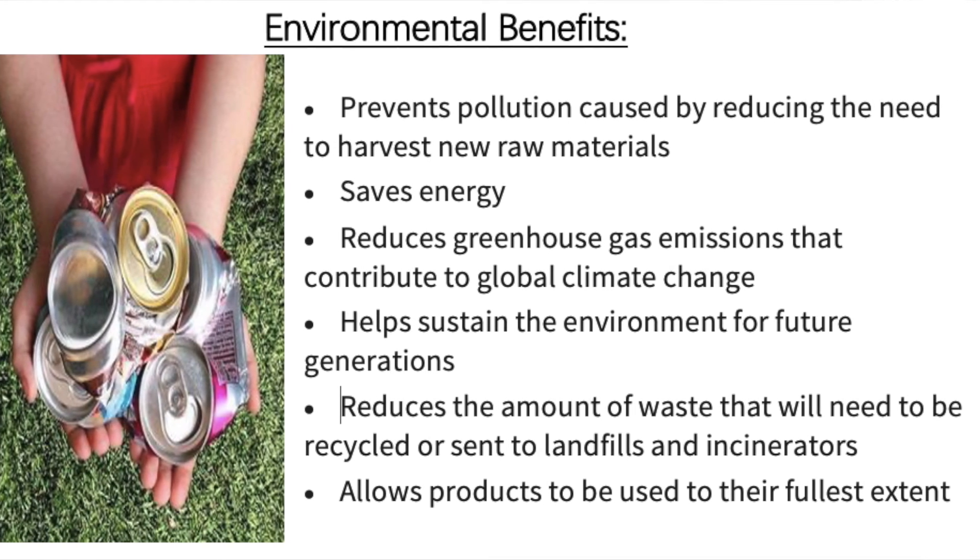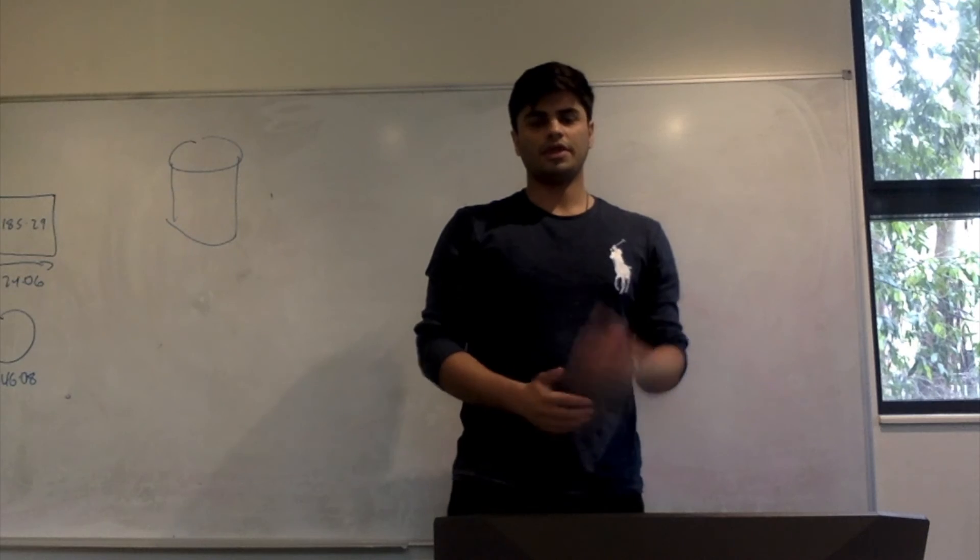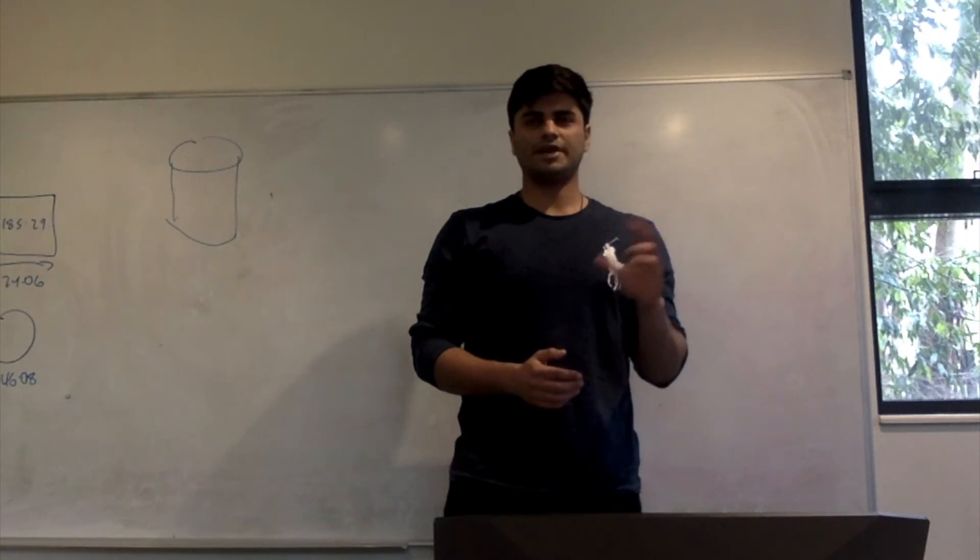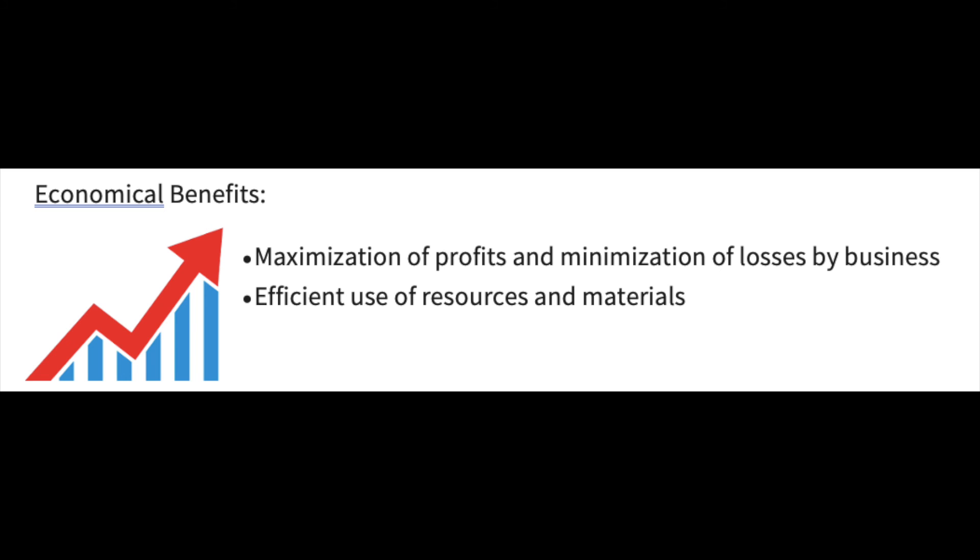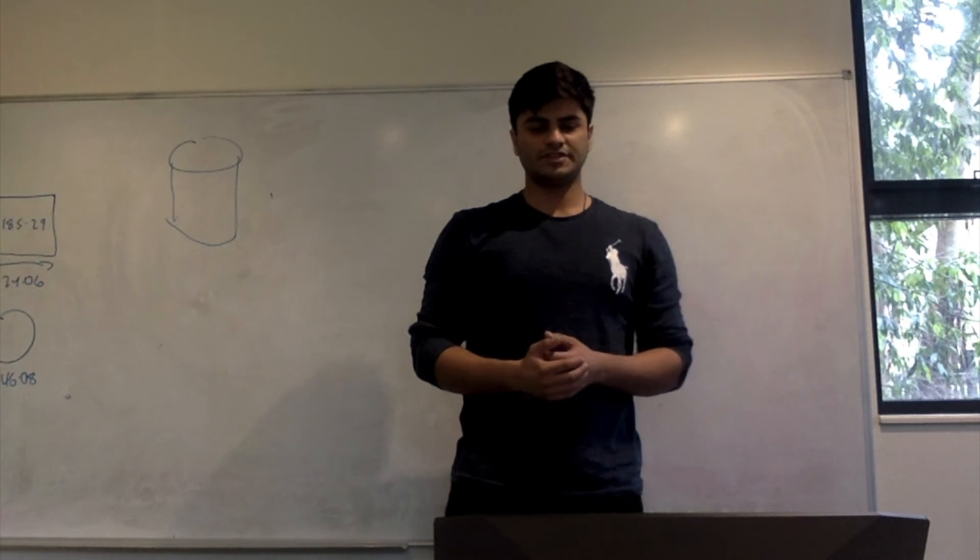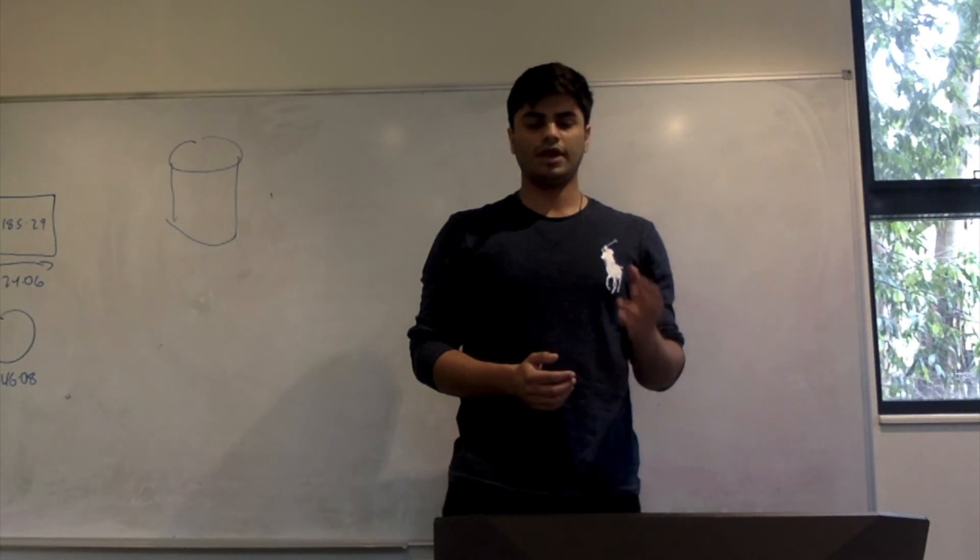This also reduces the amount of waste sent to landfill sites and incinerators. The economical benefits are that companies would be able to maximize their profits and minimize their losses in the sense that money would be saved in the amount of aluminium being ordered for cans. Hence, we can see that the derivative can be used to find the minimum volume that has both economical and environmental benefits.